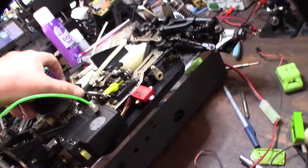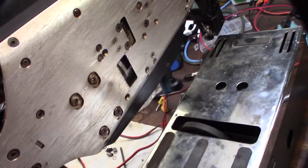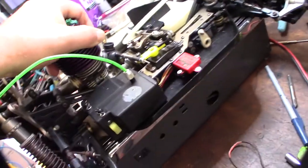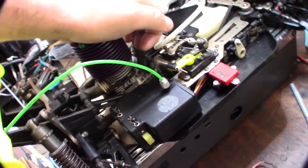All right, so the way this thing operates is that rubber wheel is supposed to hit the flywheel back there. And you're supposed to be able to push down on it and engage the flywheel that way.